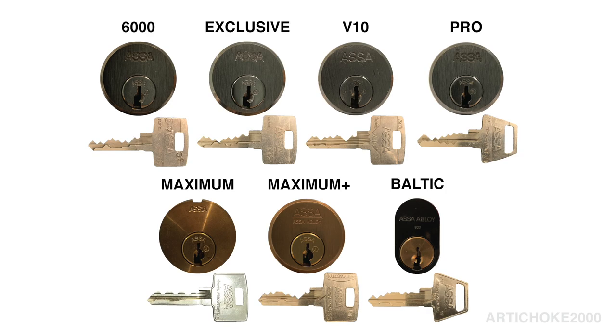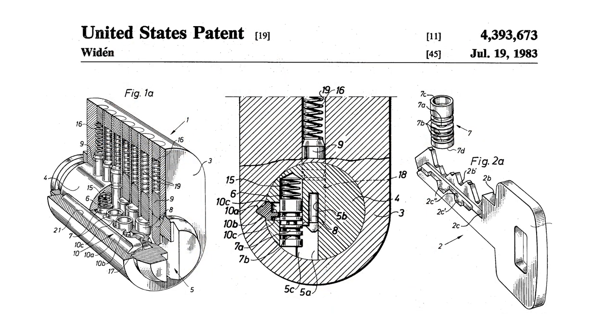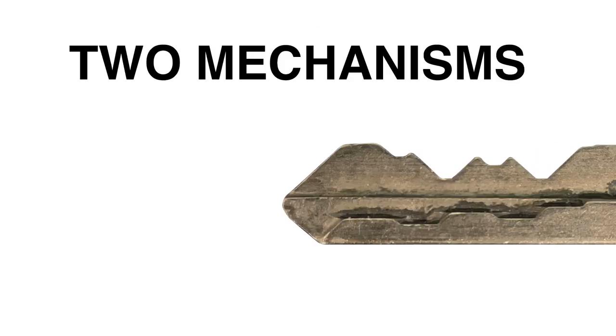The ASSA Twin is a group of Swedish high-security locks which was originally patented by Bo Wyden in 1980. As the name implies, the twin has two mechanisms.